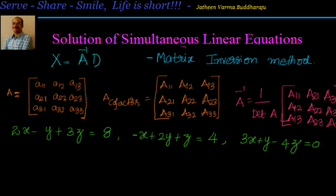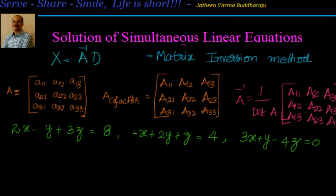We have three linear equations here. One is 2x minus y plus 3z equal to 8; minus x plus 2y plus z equal to 4; and 3x plus y minus 4z equal to 0.